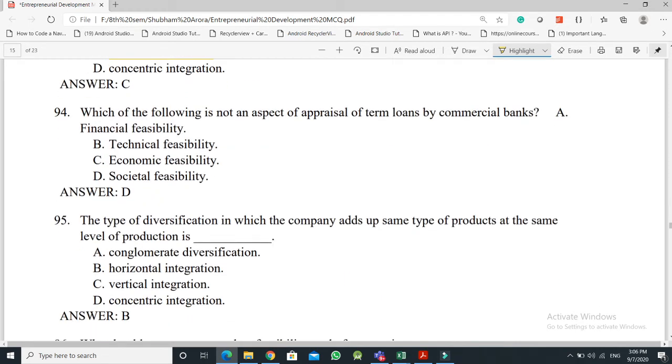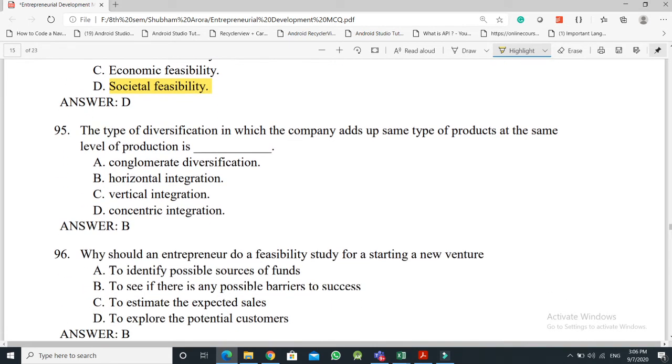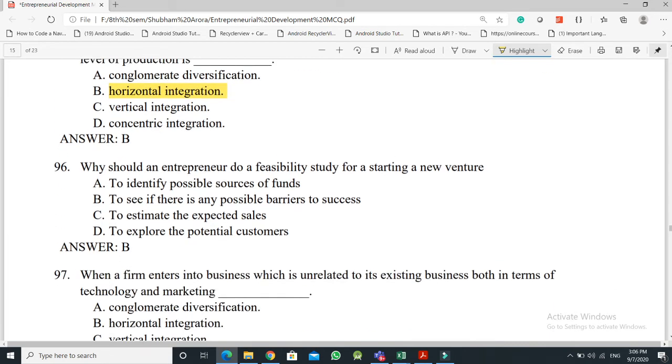Question No. 94: Which of the following is not an aspect of appraisal of term loans by commercial banks - the answer is Option D, societal feasibility. Question No. 95: The type of diversification in which the company adds up the same type of products at the same level of production is called - the answer is Option B, Horizontal integration.